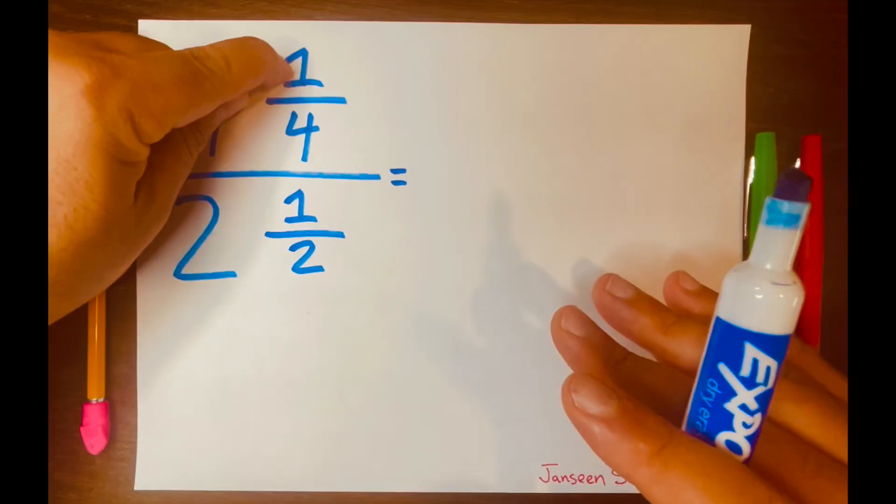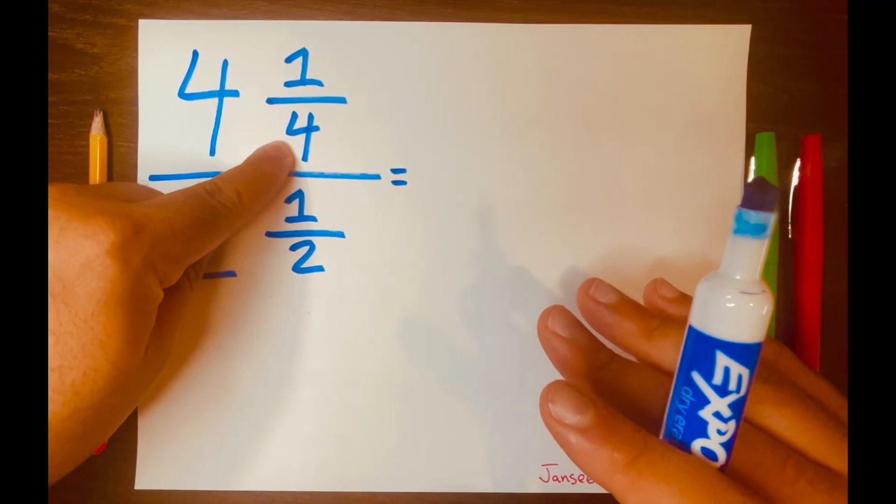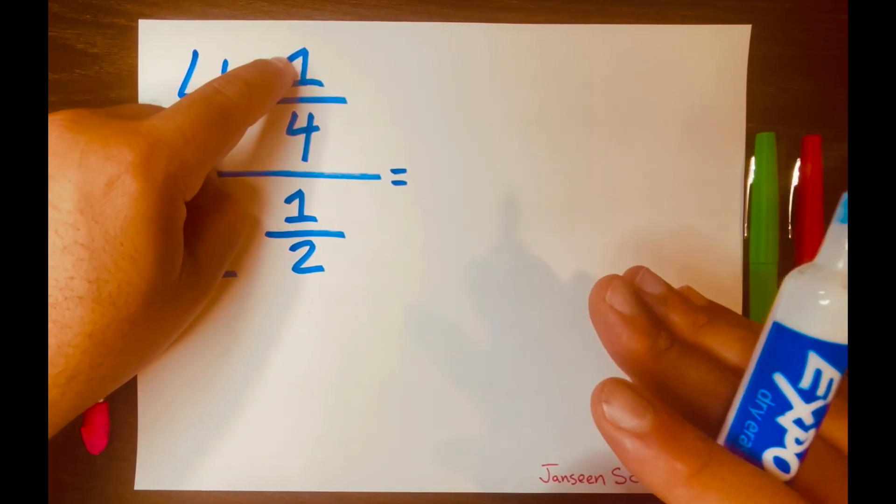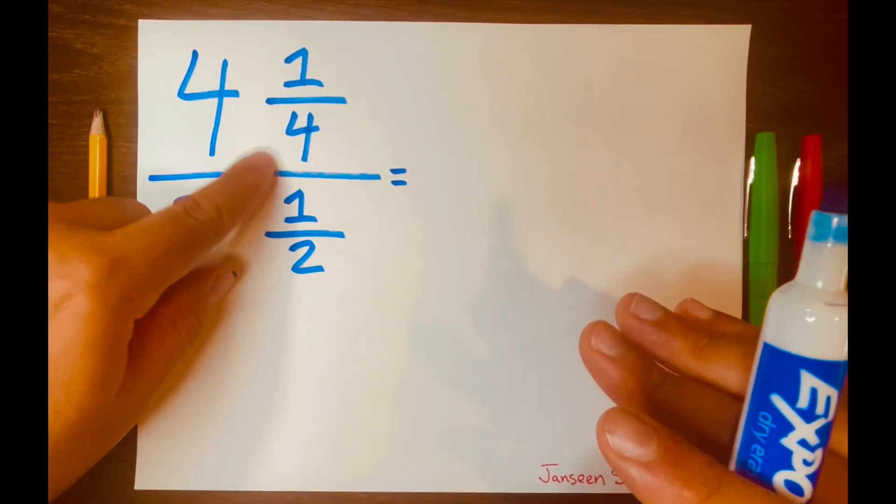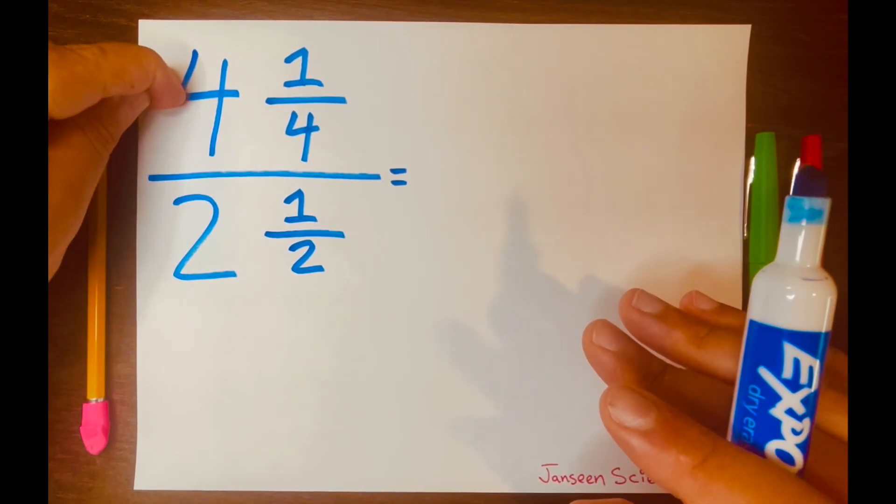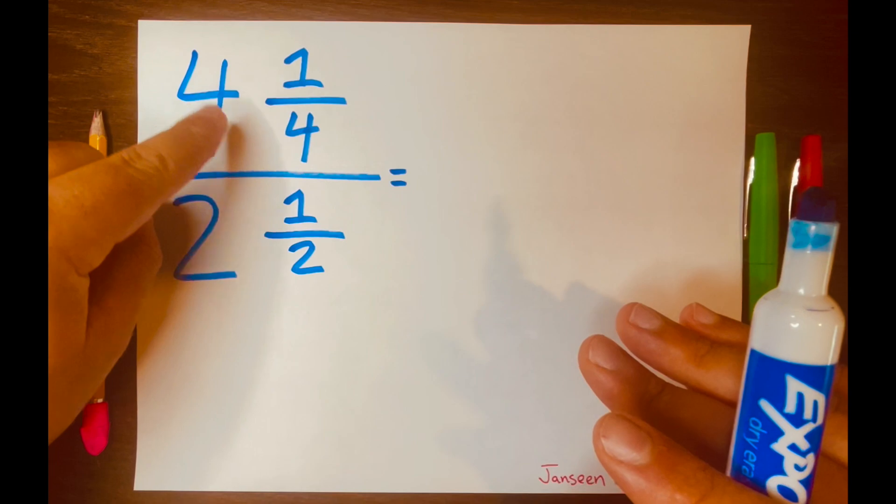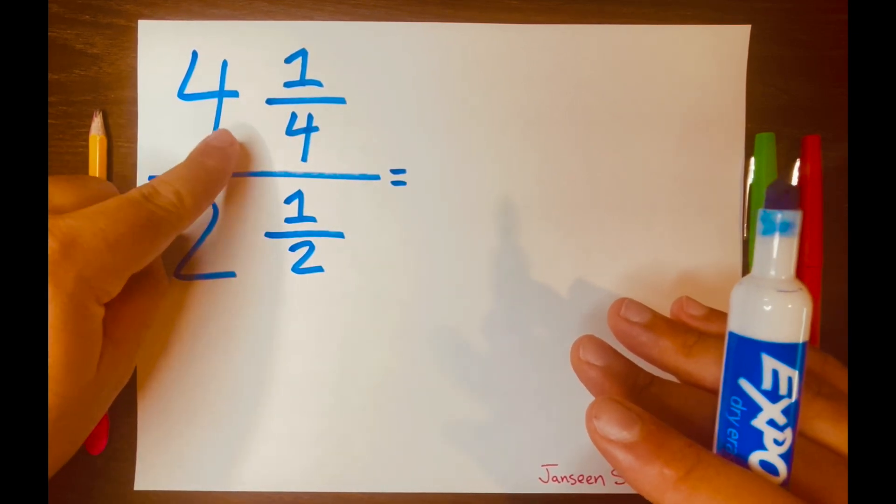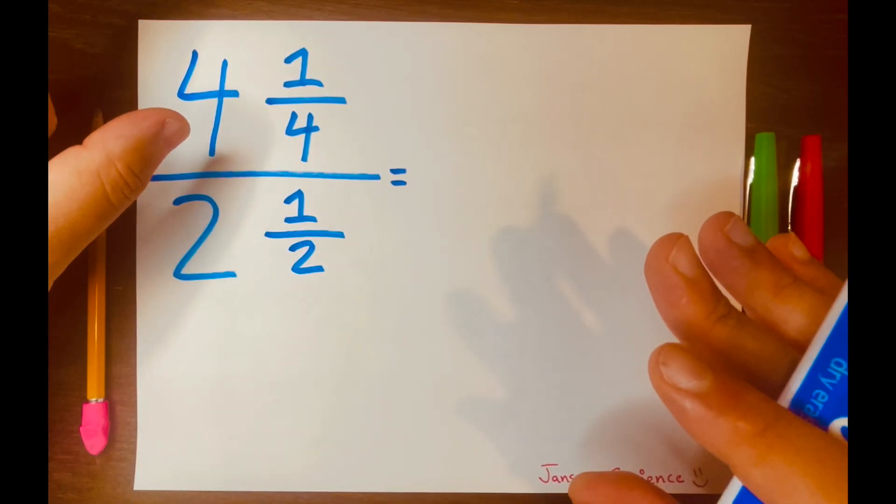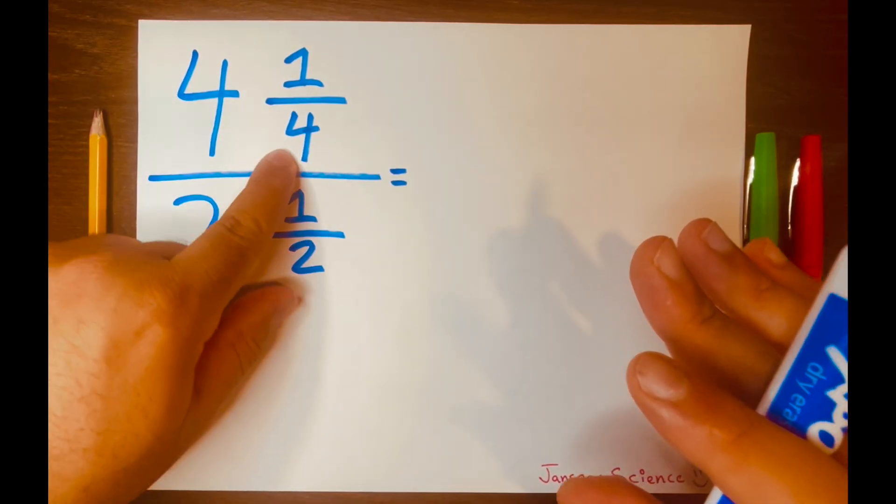So 1 is small, 4 is big, or you can say 4 is bigger than the 1, and this makes it a proper fraction. So we have two mixed numbers in this problem, and we need to turn those into improper fractions. An improper fraction is when the top number is bigger than the bottom number.